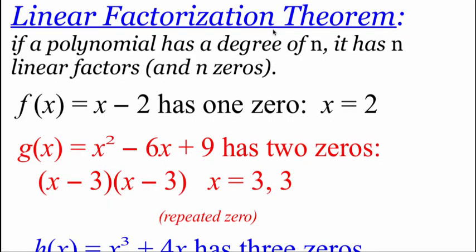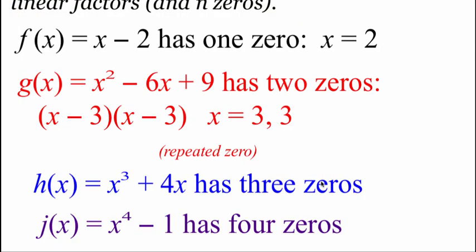In math, when we're solving equations or functions, there's this thing called the linear factorization theorem. It says if a polynomial has a degree of n — a highest power of n — then it's going to have exactly n linear factors and n zeros. So if we were given a linear function, it's got one linear factor, so we could just set that equal to zero and solve. Quadratic, since the highest power is two, it's going to have two linear factors, and we set each one equal to zero to find two zeros. Cubics are going to have three zeros, quartic functions are going to have four zeros, so on and so forth.